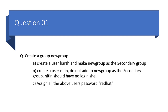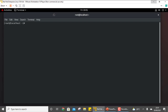The first question is related to users and groups. You need to create a group called 'newgroup' and then achieve 3 sub-parts. The first part is to create a user 'hush' and make newgroup as the secondary group. So the very first task is to create a new group. The command to create a group is 'groupadd', and the name was 'newgroup'. The group is created.